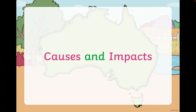When looking at Australia as a case study, we really want to focus on two aspects: how and why underpopulation is occurring in Australia, and what the impacts or consequences or effects of this underpopulation are.